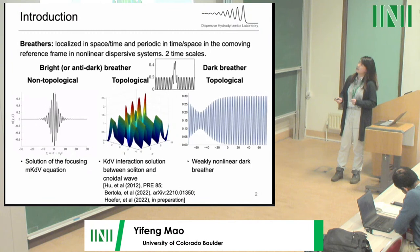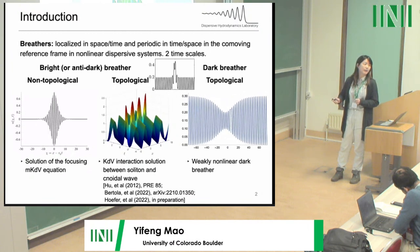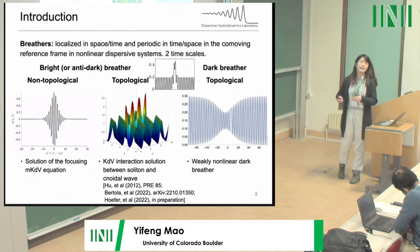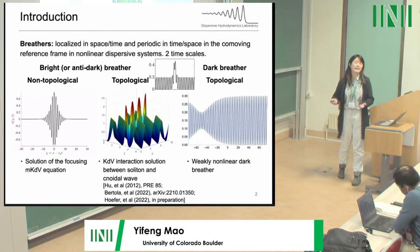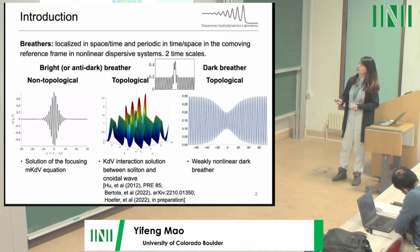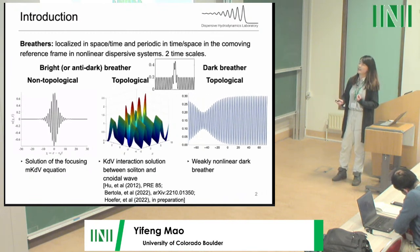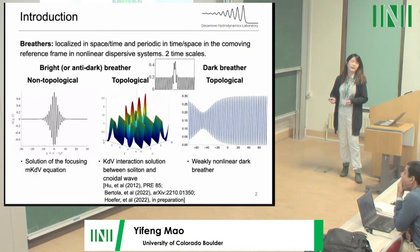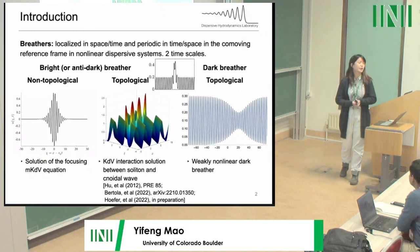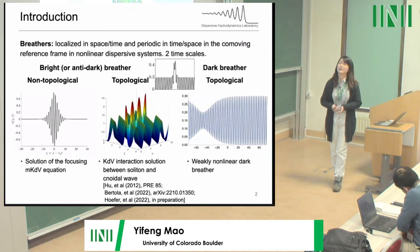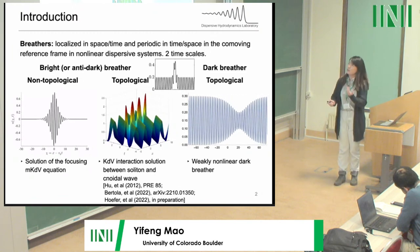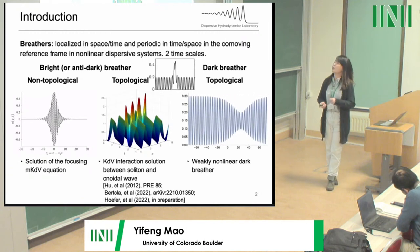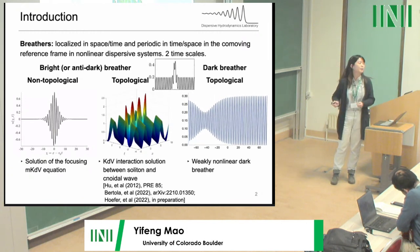If there is a reduction in amplitude on the carrier wave background, we call this type a dark breather. The dark breather is always topological because it always has a non-trivial carrier wave background associated with a phase shift. This is a weakly nonlinear dark breather, often referred to as weakly nonlinear envelope solitary waves. In our work, we want to extend that concept to the strongly nonlinear regime, calling this a topological dark breather.